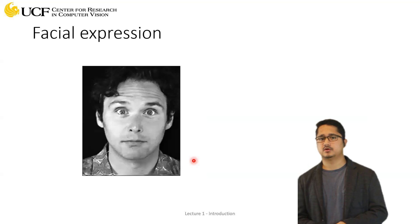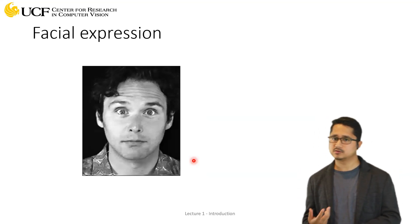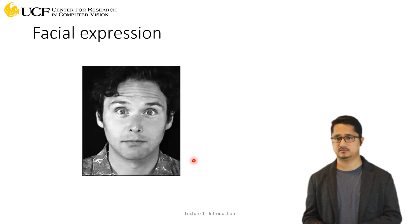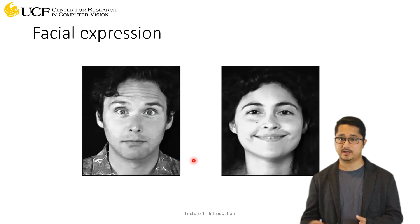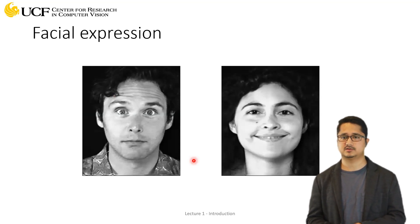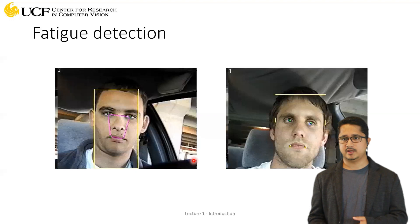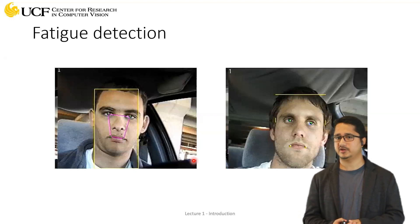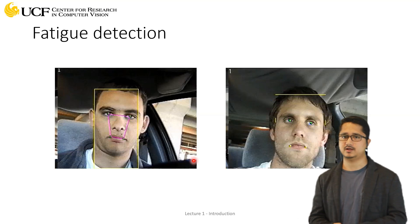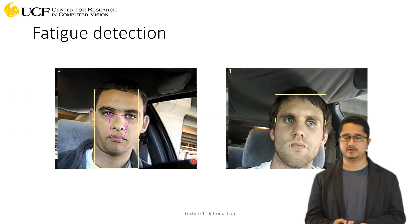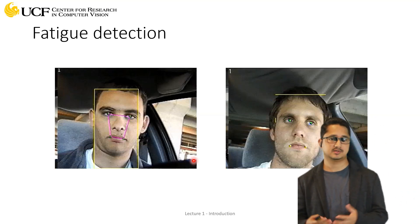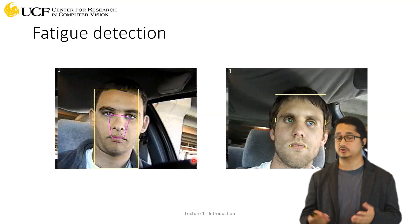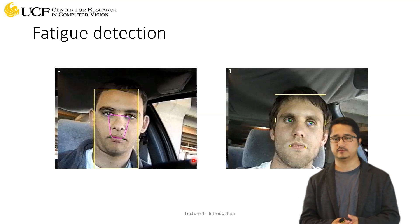Another interesting problem related to faces is distinguishing different facial expressions. Sometimes we're happy, sometimes sad, we might be surprised — can we identify those different expressions by just looking at a face? As humans we can, but can machines do it? There are many applications, for example fatigue detection: if a person is driving a car and a system can automatically detect the person seems very tired, it can alert them that maybe they should not drive anymore.